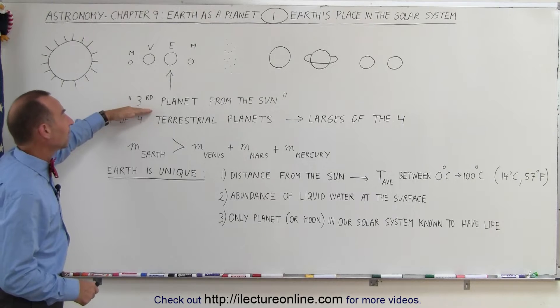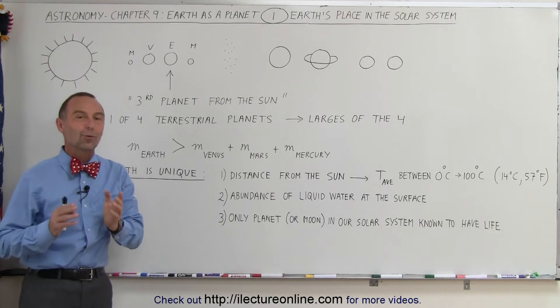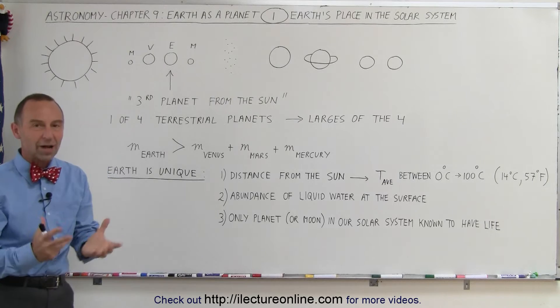And the Earth is one of the four terrestrial planets. We consider it the third planet from the Sun. Sometimes it's considered the third rock from the Sun because it's a rocky planet.